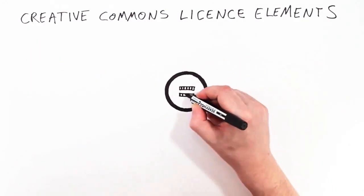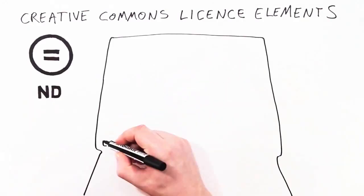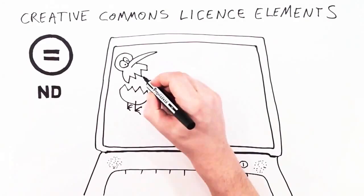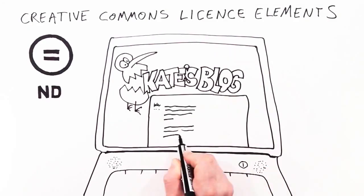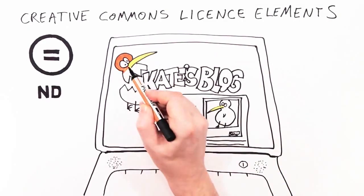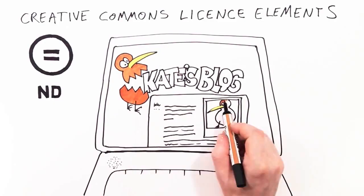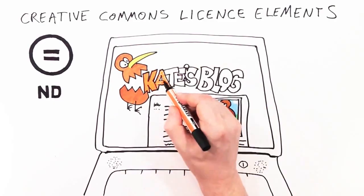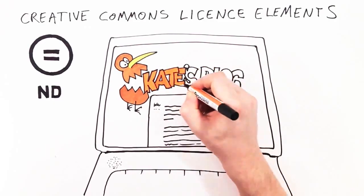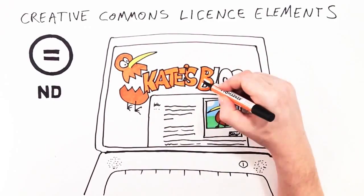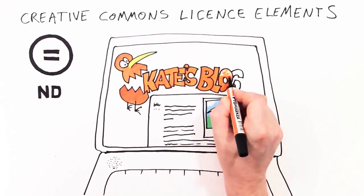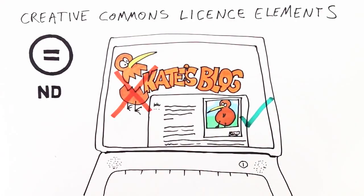This is no derivatives, and it means that Kiri hasn't given permission to change her photo. Kate can use CC Kiwi on her design blog but will need to ask Kiri before retouching or mixing up the image.